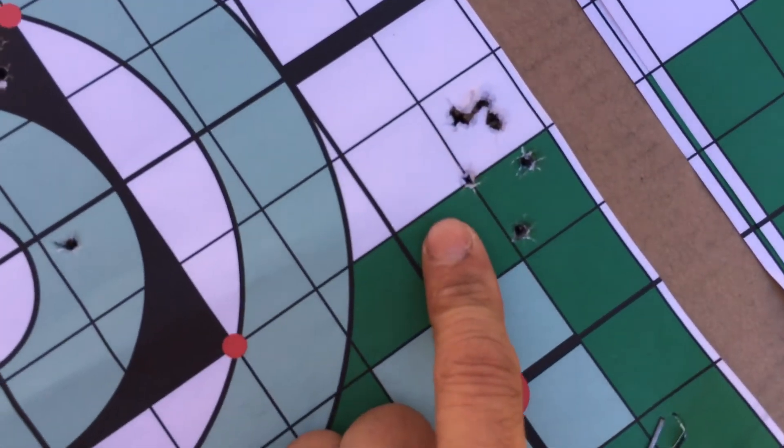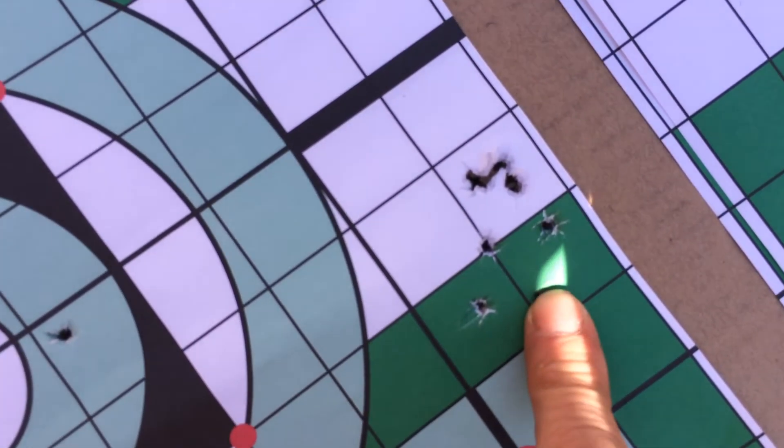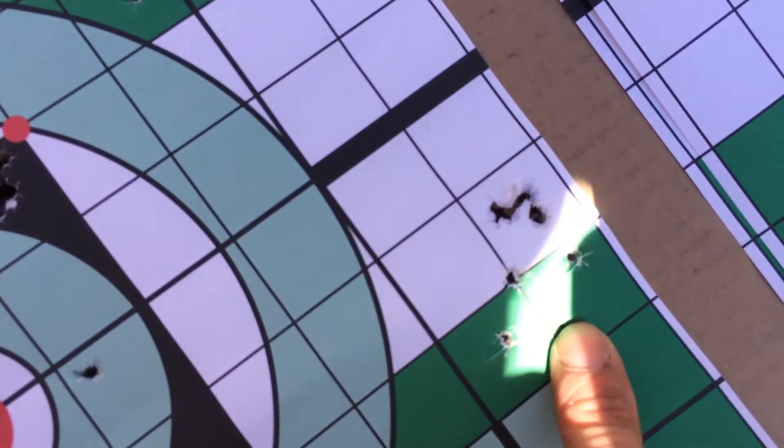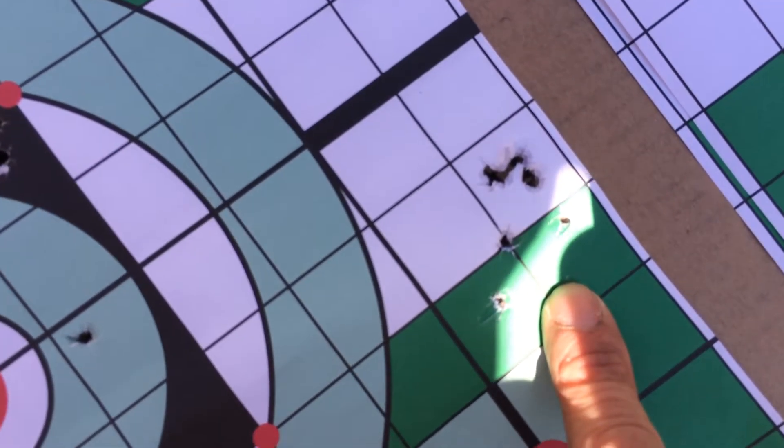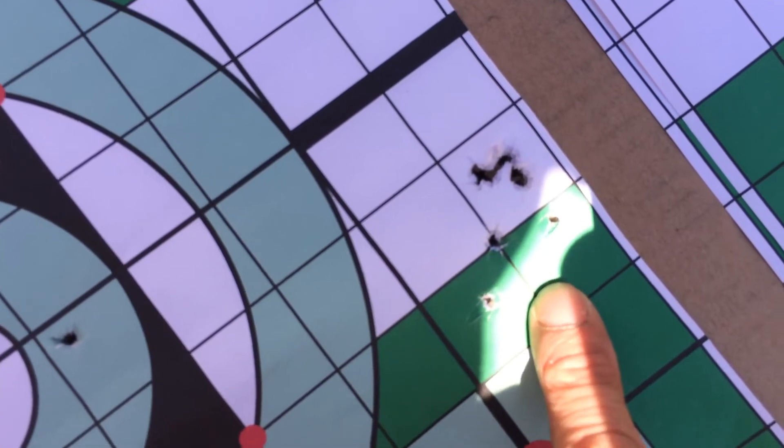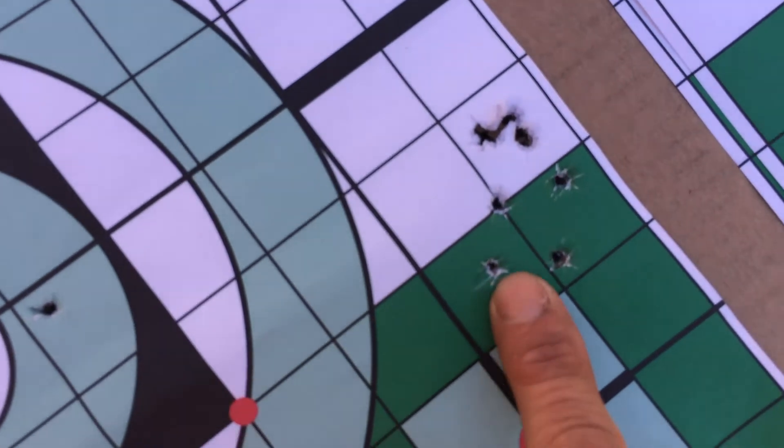Again, this is shooting from a 25 caliber Marauder with a Green Mountain barrel, but with a heel valve kit and also a Humor regulator set at I believe 2200 PSI.